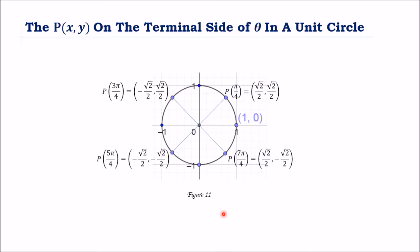Let us investigate Figure 11. What have you noticed with the coordinates x and y on the terminal side of theta on the unit circle? The central angles are in order: π/4, then 2π/4 which gives us π/2, then 3π/4, 4π/4 which is π, 5π/4, 6π/4, 7π/4, and 8π/4 which is 2π. There are 8 increments of π/4 in one full rotation.